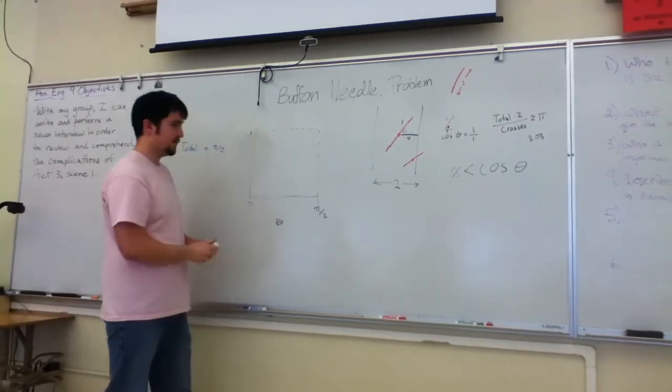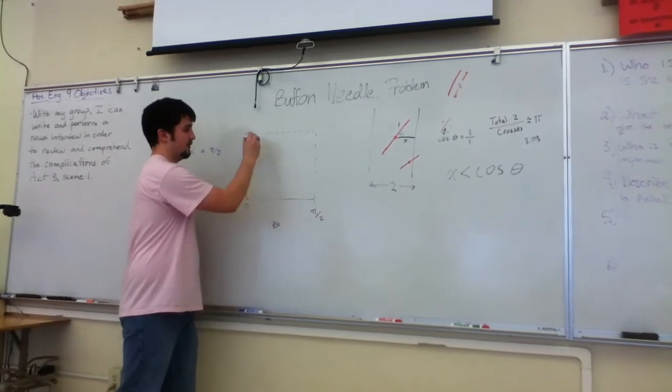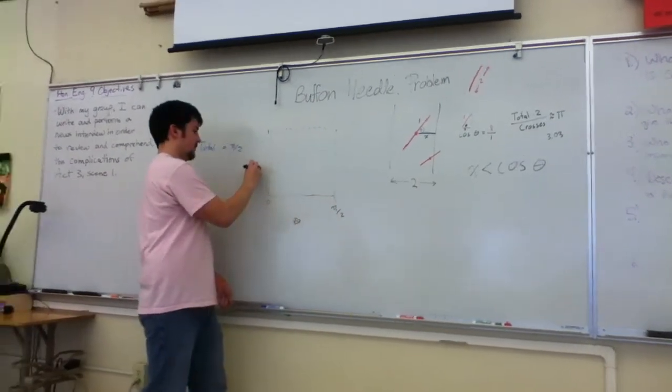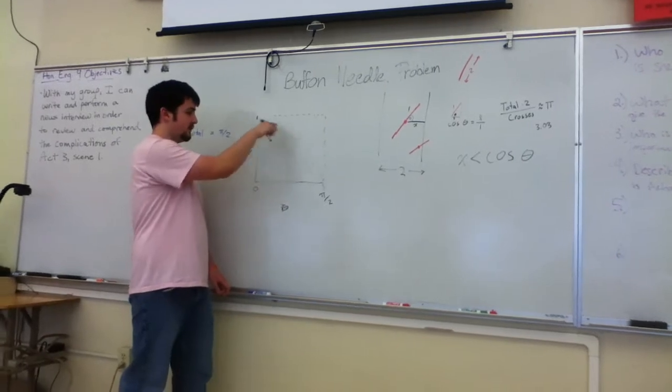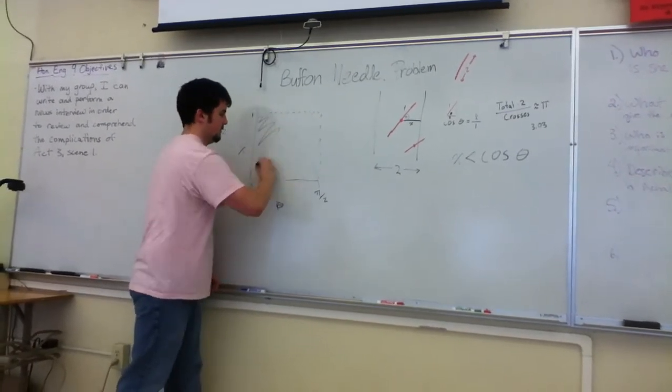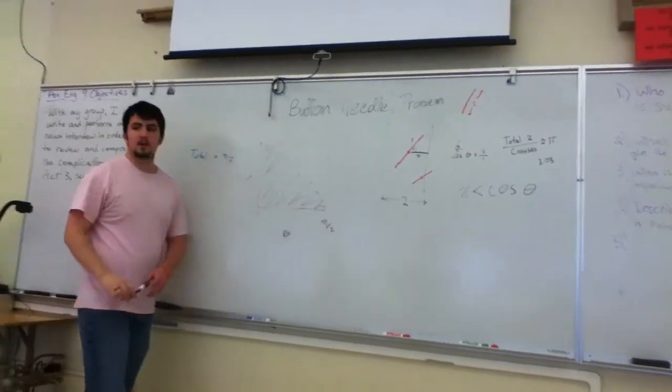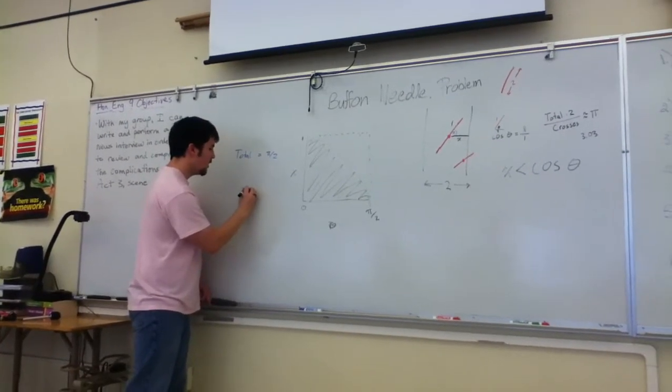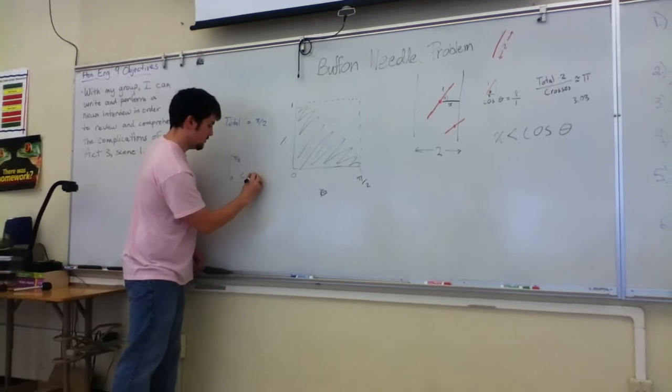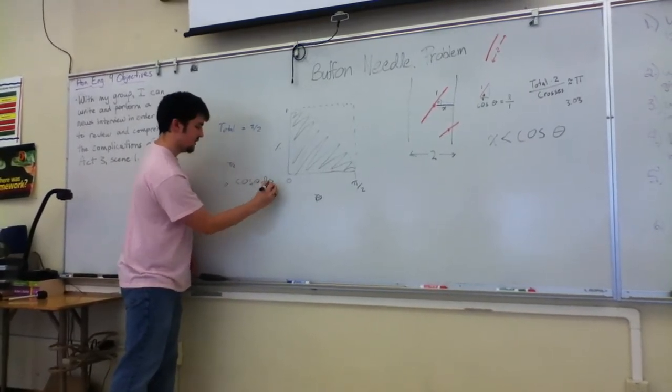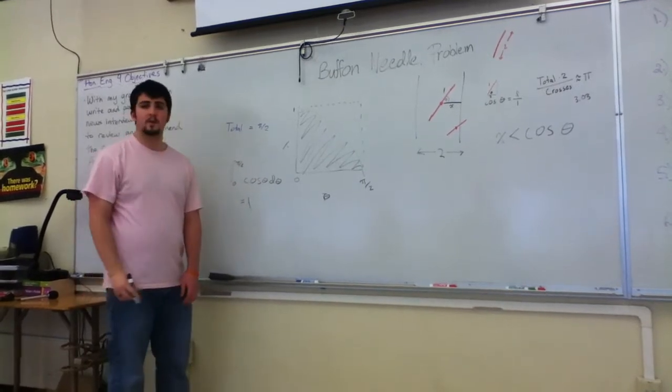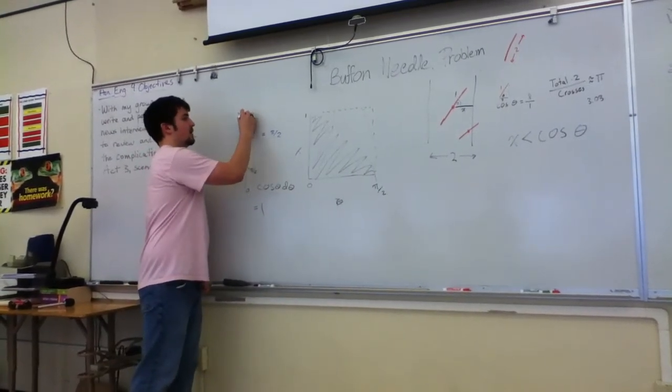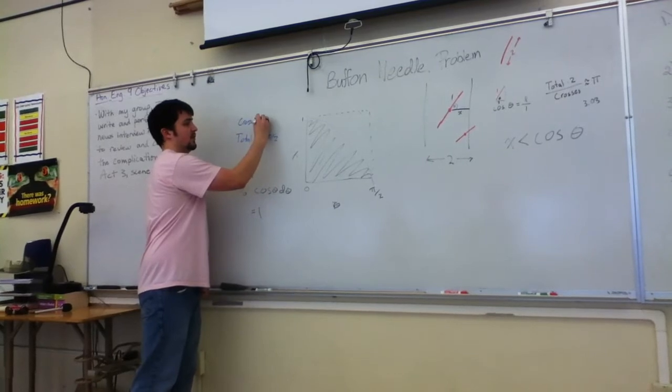If we graph cosine from 0 to pi over 2, anything where x is less than cosine of theta is a cross. We can use a little bit of calculus to find out that this equals 1, which means that the crosses represents an area of 1.